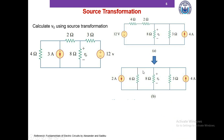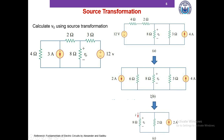After applying three source transformations, we end up with two current sources in parallel: 2 ampere going down and 4 ampere going up, and three resistors in parallel: 6 ohm, 8 ohm, and 3 ohm. We combine the two current sources and also combine the 6 ohm and 3 ohm resistors into one. Now to determine V0, we simply apply the current divider rule, determine the current flowing into the 8 ohm resistor, and multiply by 8 ohm to obtain V0, which equals 3.2 volts.